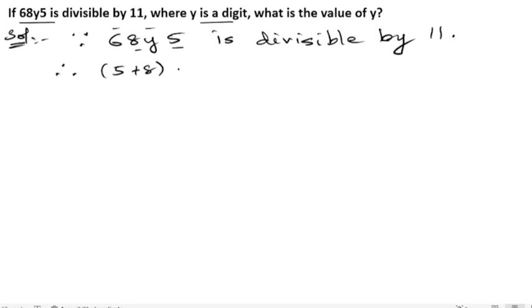So two points are clear now: in place of 8 + y we can get numbers like 0, 9, 18, and 27, and so on, because all these numbers are divisible by 9.